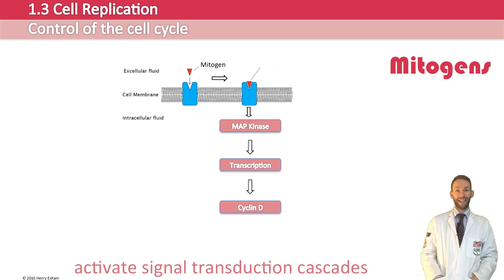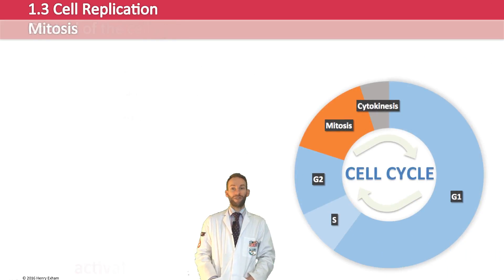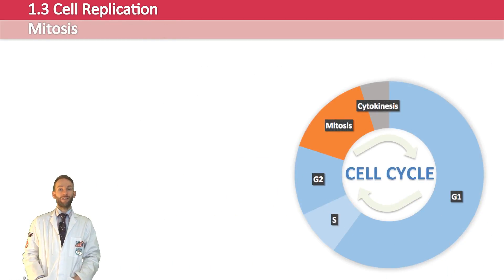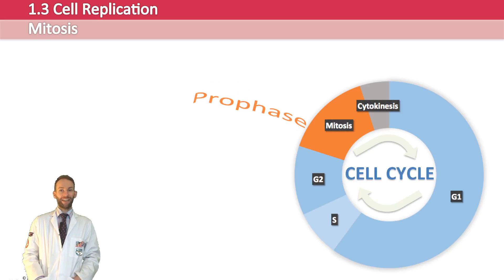Mitosis is the next phase of the cell cycle. In interphase, the chromosomes were replicated so we now have two complete sets of DNA. What has to happen now is that it has to be organized and split evenly into the two daughter cells — and that's what happens in mitosis. Mitosis is split up into four further stages: prophase, metaphase, anaphase, and telophase.